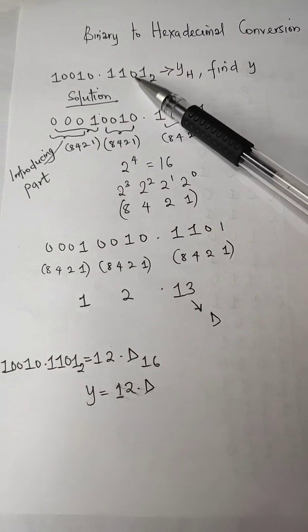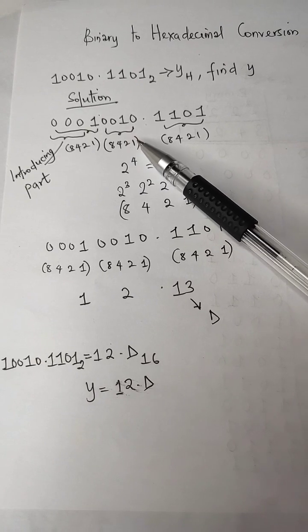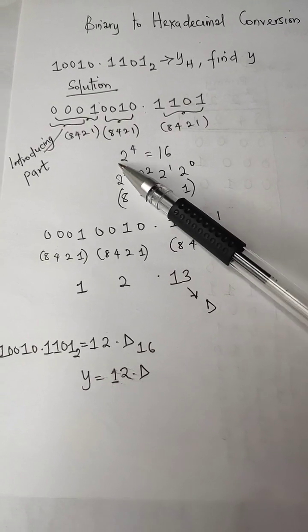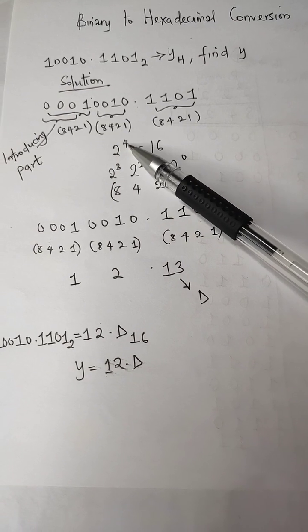Let's produce a solution to this given question. The first thing we need to do is find the relationship between binary and hexadecimal, which is 2 raised to power 4.